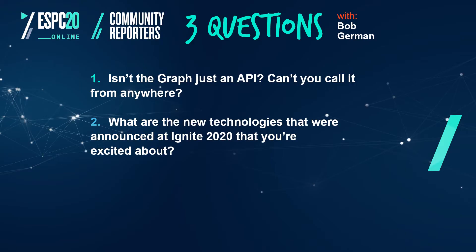There are a lot of announcements made as part of Ignite, so question number two: what are the new technologies announced at Ignite 2020 that you're excited about? The first one stays on theme — it has to do with the finer points of application permissions. As it turns out, the permissions that you give to an application tend to be rather broad at times, and they need to be more granular for people to feel comfortable.